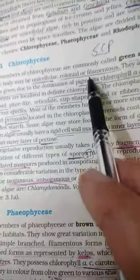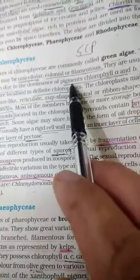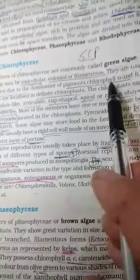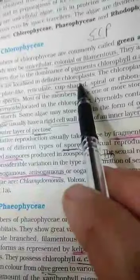Now why are they green? Because of the presence of a pigment, and the pigment is chlorophyll A and B, which is present in chloroplast.